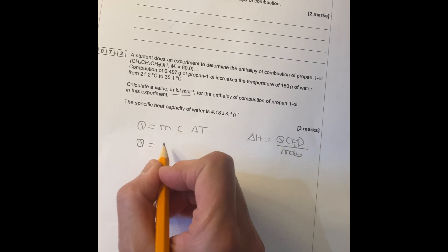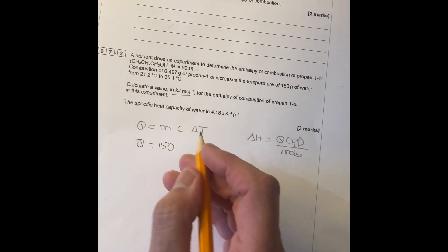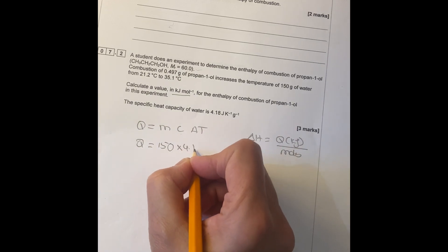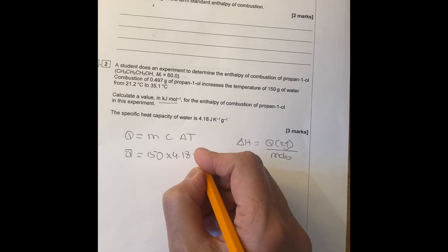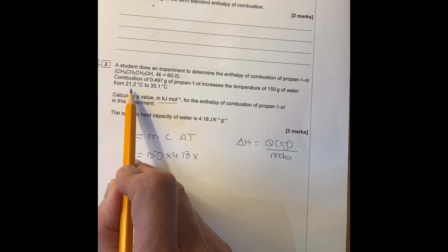Q equals to mass of water, which is 150 grams, times 4.18 specific heat capacity, times the change. So it goes from 21, so 35.1 minus 21.2.